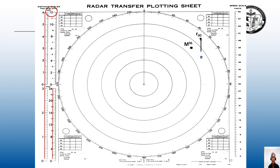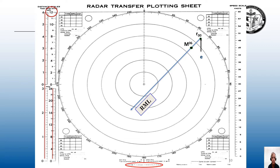Six minutes later, I get another set of range and bearings using my variable range marker and electronic bearing line, and I am going to plot and label this as M-06, or minute six, for six minutes later. Now I have R and M, which means I can now draw a relative motion line. This is very important because this is how this vessel is going to track down the radar toward us.